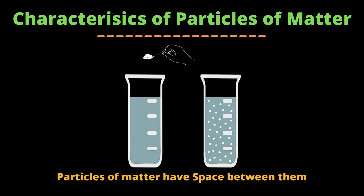As we look around, we can find many living and non-living things. These things are made up of some materials. Those materials are called matter. Matter is particulate in nature — it is made up of tiny moving particles.